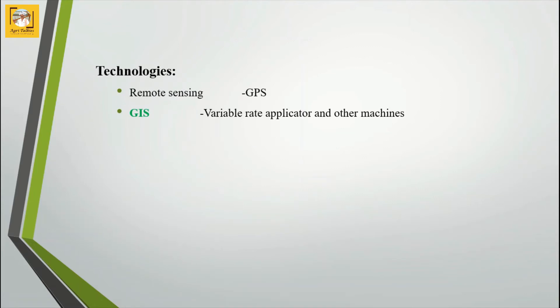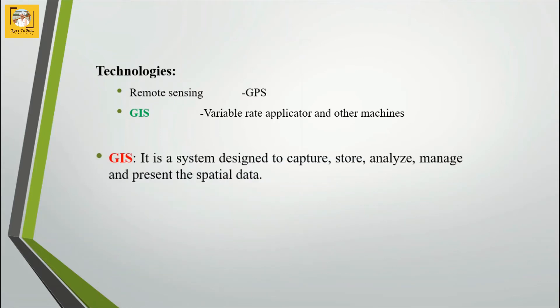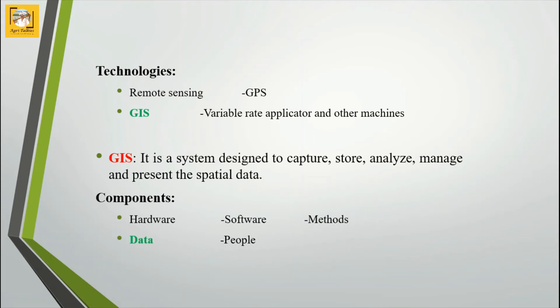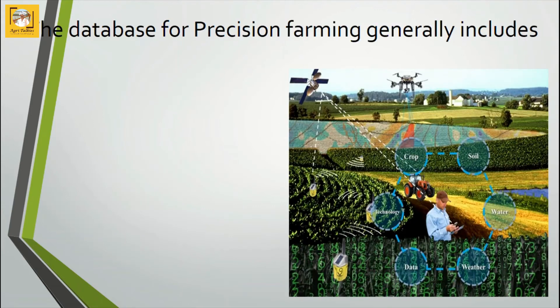Some of the technologies being used in precision farming are remote sensing, GPS, GIS, variable rate technology, and some remotely controlled machines. We are particularly interested in the application of GIS in precision farming. GIS is a system designed to capture, store, analyze, manage, and present spatial data. Its components include hardware, software, applications, data, and people.